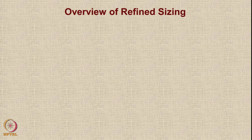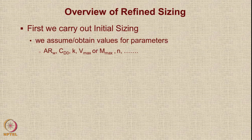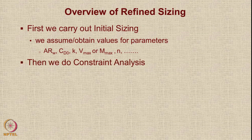Let us first have an overview of refined sizing. First we carry out initial sizing. We assume or obtain the values of certain parameters such as the wing aspect ratio, the aircraft zero-lift drag coefficient CD naught, the induced drag coefficient K, V max or M max, load factor N, etc. Once we do initial sizing, we have an estimate of W0, the design gross weight.